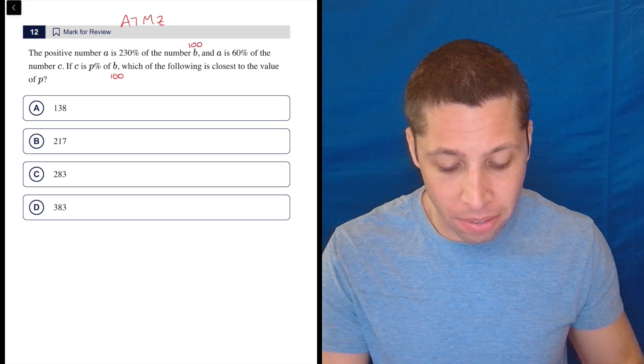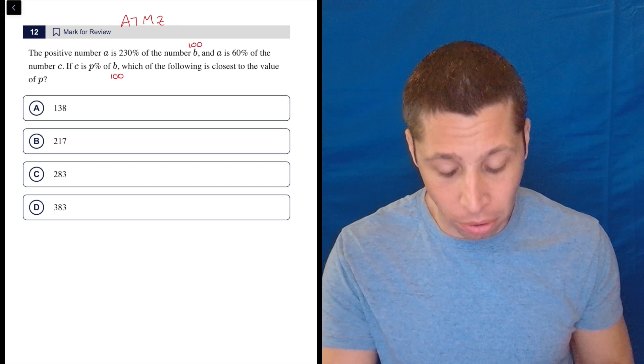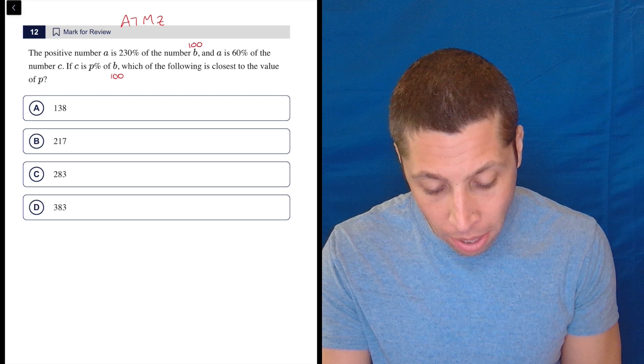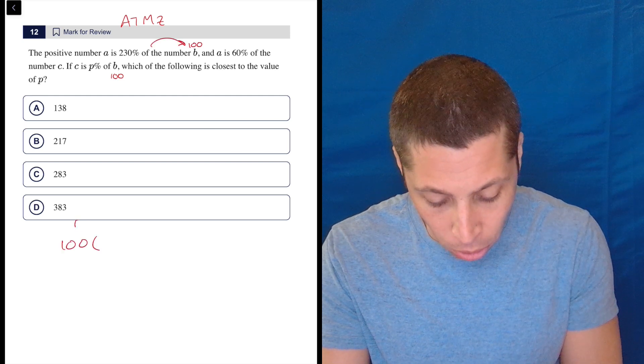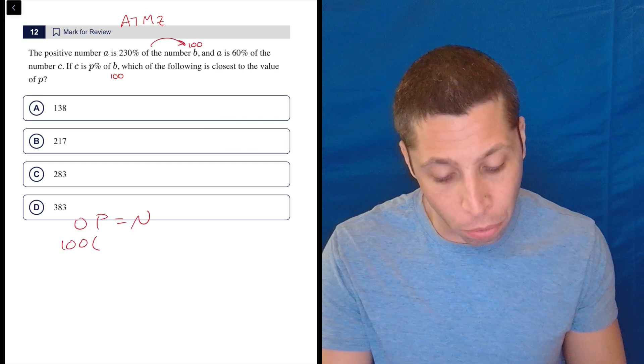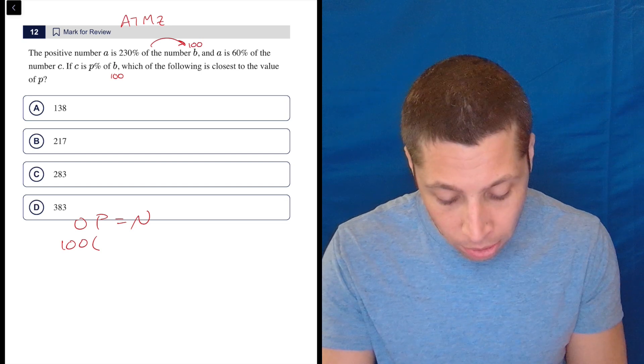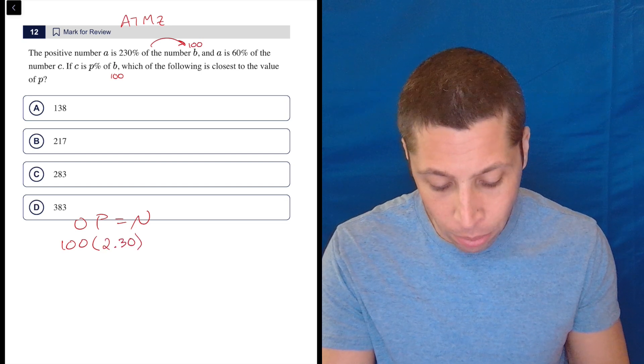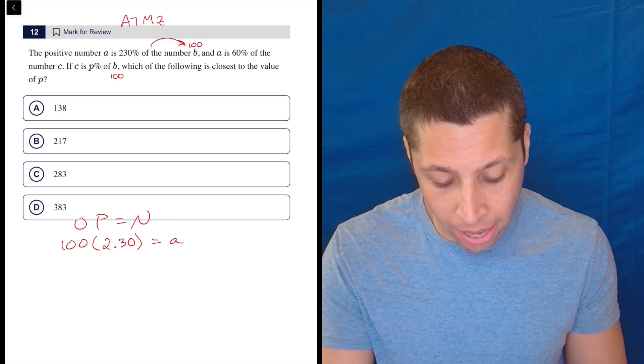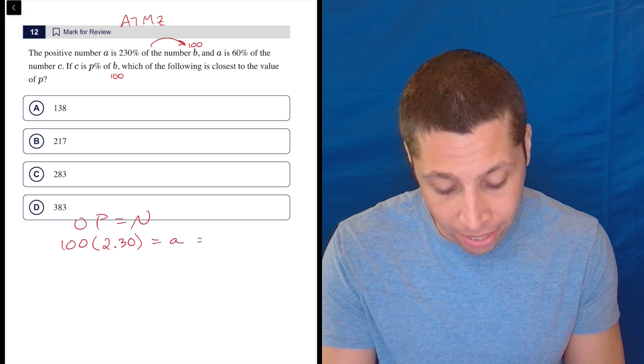So when I say positive number A is 230% of B, I do have to make sure I use the right OPEN formula. Of is telling me that my original is B. So OPEN is going to be the normal OPEN formula because it's a percent of. So percent, as a decimal, is going to be 2.30. And then that's going to give me my value of A. So I could just do that in my head. A is going to be 230.